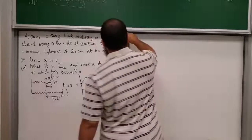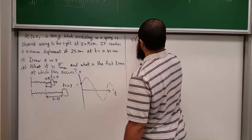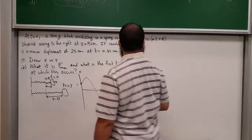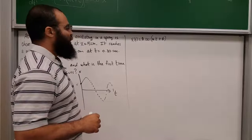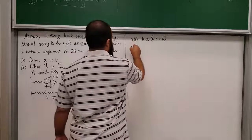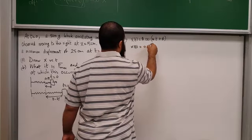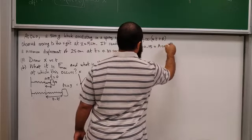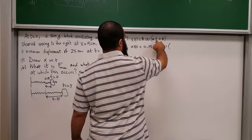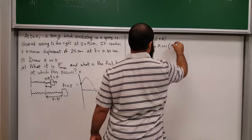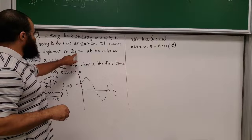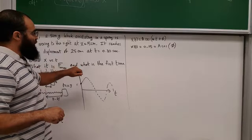We write x(t) = A·cos(ωt + φ). At t = 0, x = 0.15 m, so 0.15 = A·cos(φ). At t = 0.3 s, x reaches its maximum of 25 cm, so the amplitude A = 0.25 m. That gives 0.15 = 0.25·cos(φ), so cos(φ) = 0.15/0.25 = 0.6.